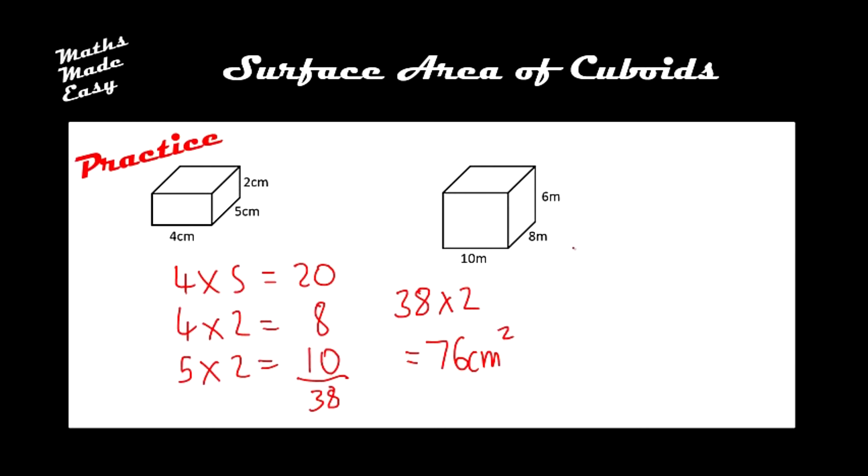And for this second one we have 10 by 8, we have 10 by 6, and we have 8 by 6. So here we've got 80, 60, and then 48. If we add these up we get 188.